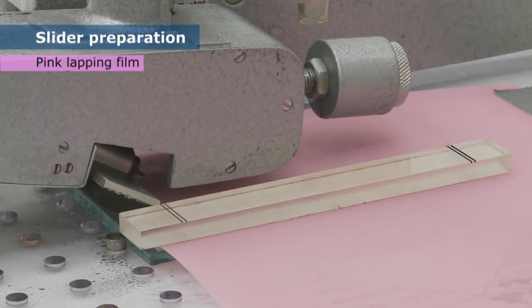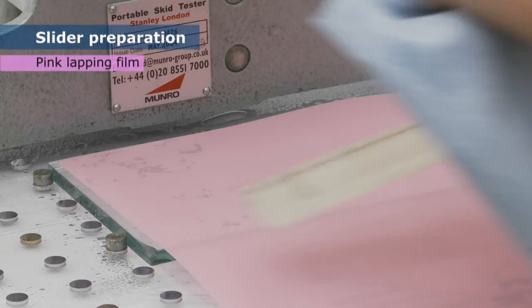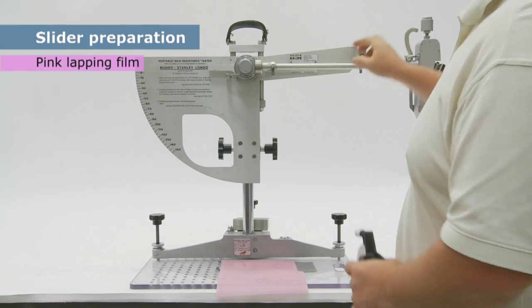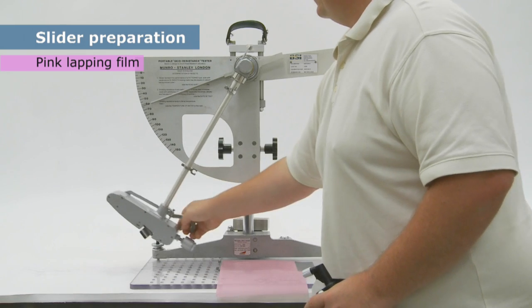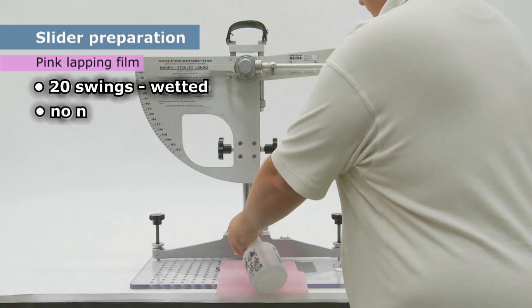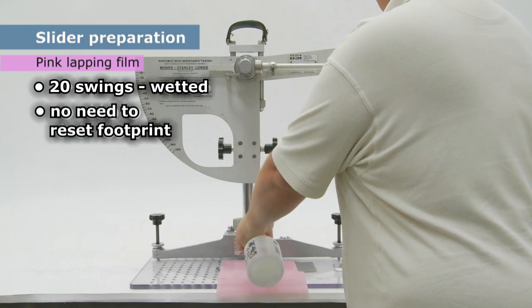The next step is to use the pink lapping film to give a final preparation of the working edge. The process is the same as for the P400 paper, but all 20 swings should be with the paper wetted and there is no need to reset the footprint part way through.